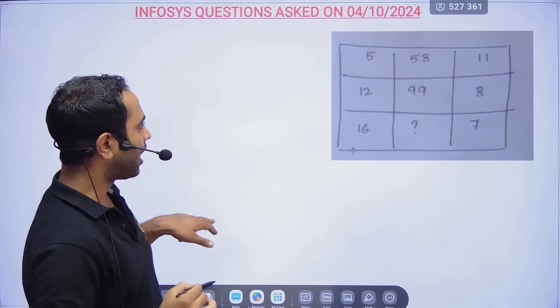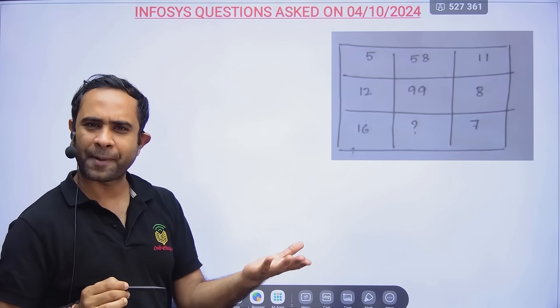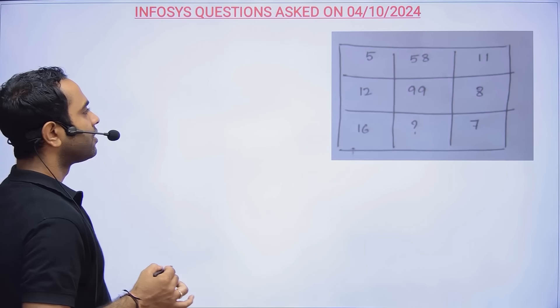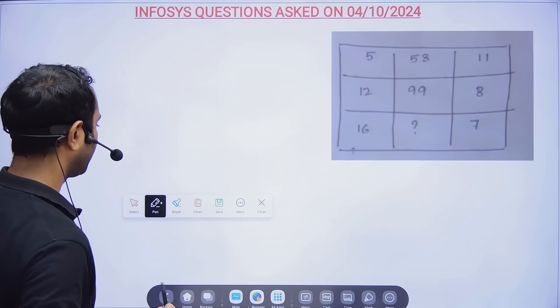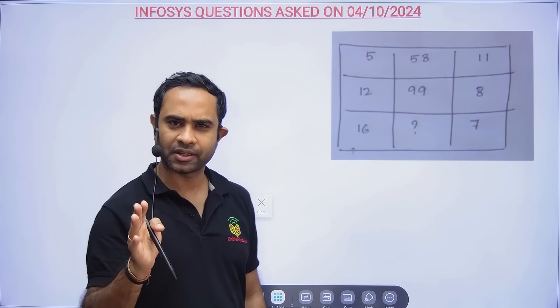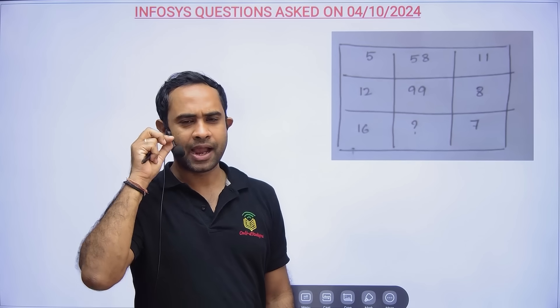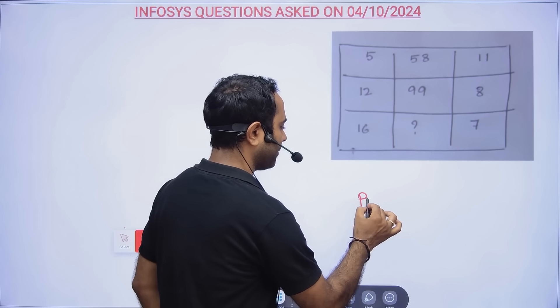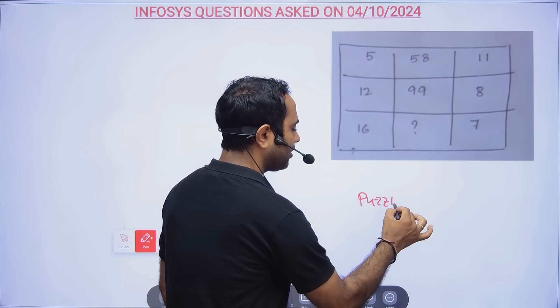There were questions from aptitude also. Now, puzzle questions - again many students were not able to clear the cutoff this time. There were two reasons: one was puzzle and one was verbal ability.